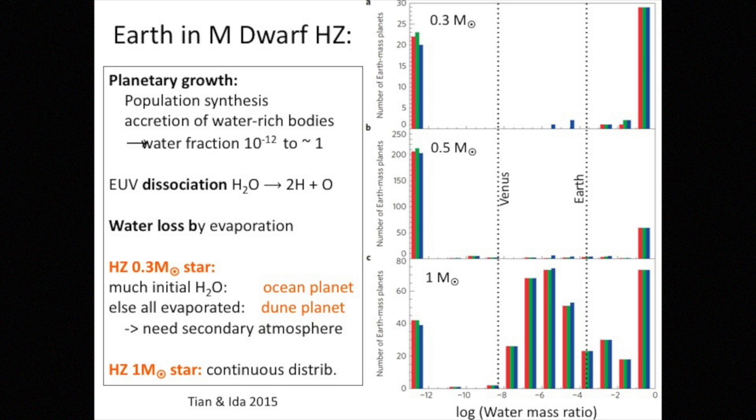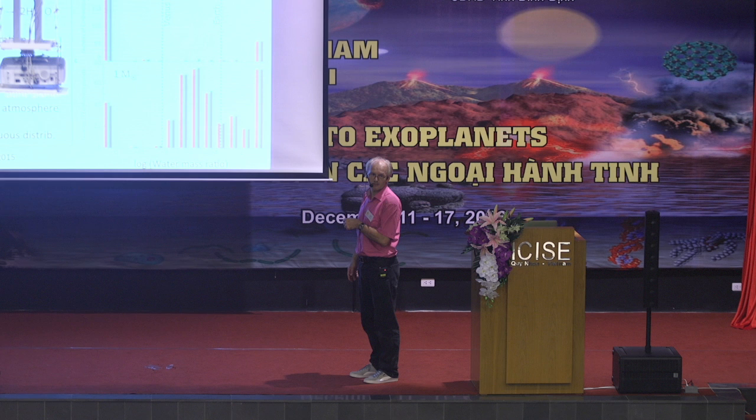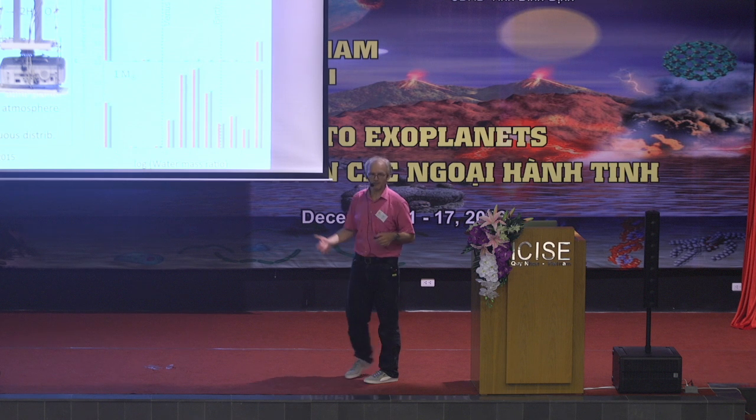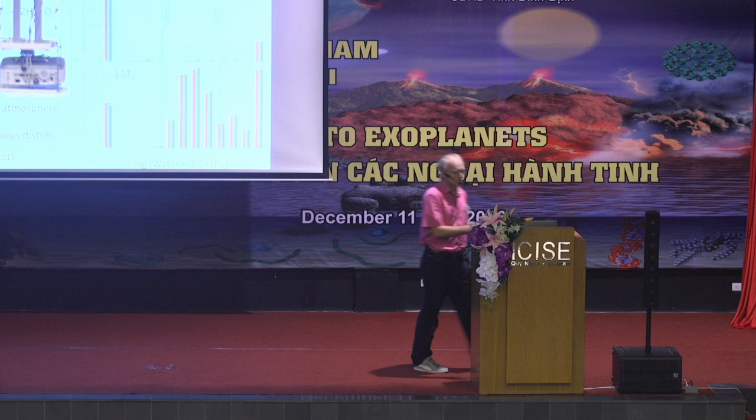I skip this perhaps as well. This is a similar calculation, but Tian and Ida, they show about the same effect here, including X-ray and UV radiation. Essentially what they say, if you do this for a G star, which evolves rapidly and doesn't have much of a change, you can keep a lot of water. Many of these planets keep their water. In M dwarfs, that's this diagram up here, you either lose all the water, as I said before, or if you have really big massive oceans at the beginning, you can keep it, but then you still have a lot of water in the end.